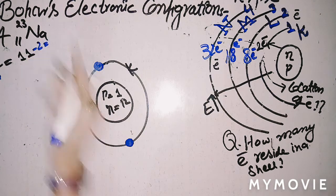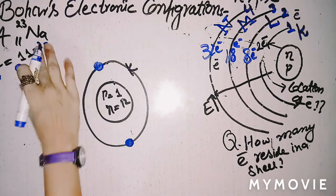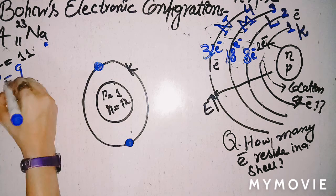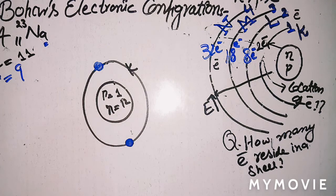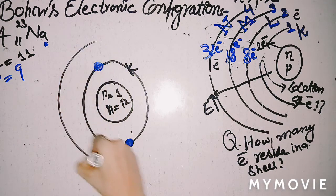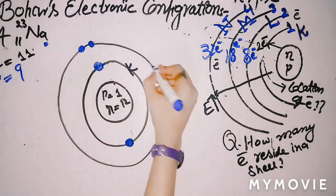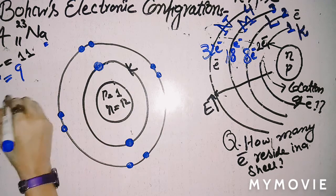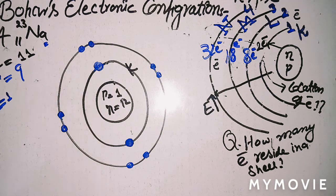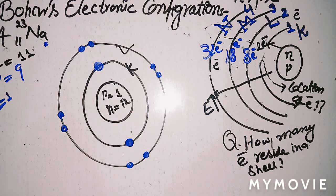After placing 2 electrons in K-shell, you subtract 2 from 11, leaving 9 electrons to distribute. The second shell (L-shell) contains a maximum of 8 electrons, so you place 8 electrons there. The remaining electrons are 9 − 8 = 1. That 1 remaining electron goes to the M-shell.